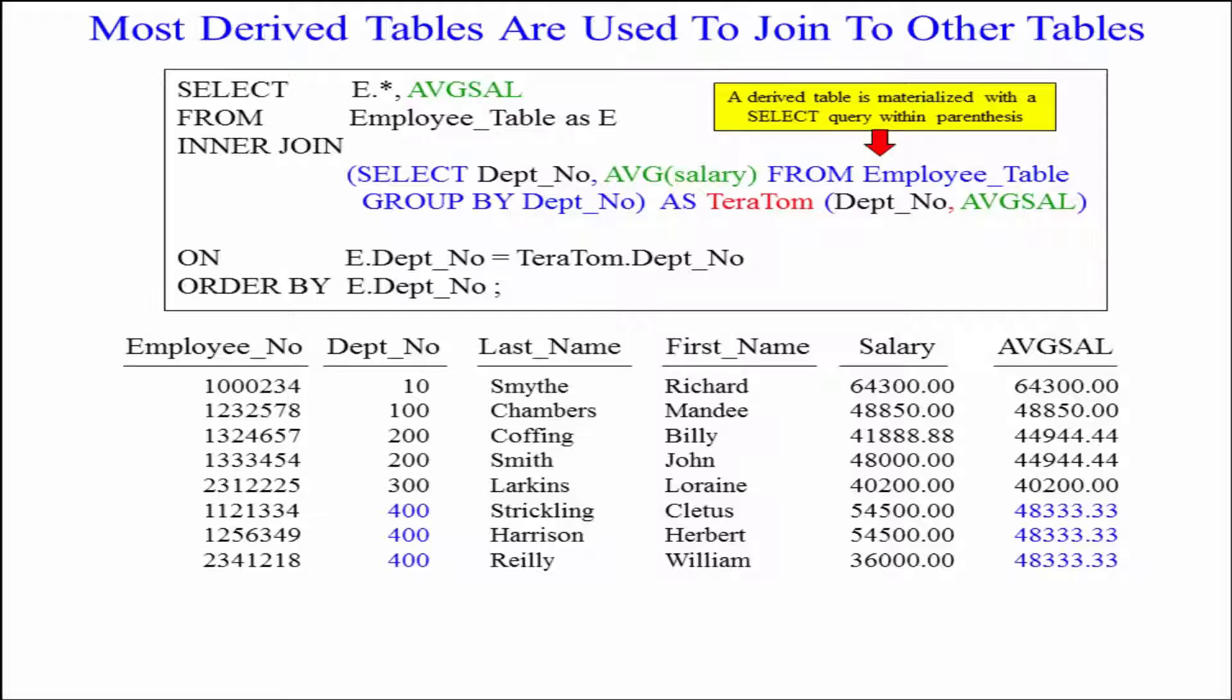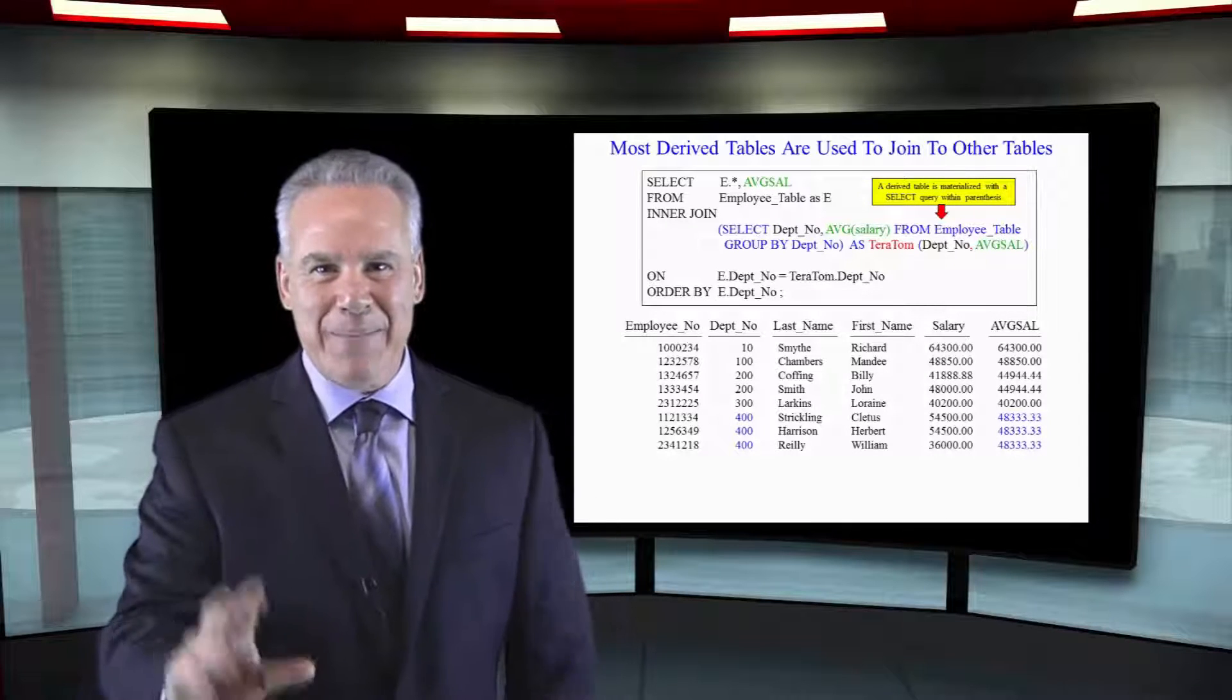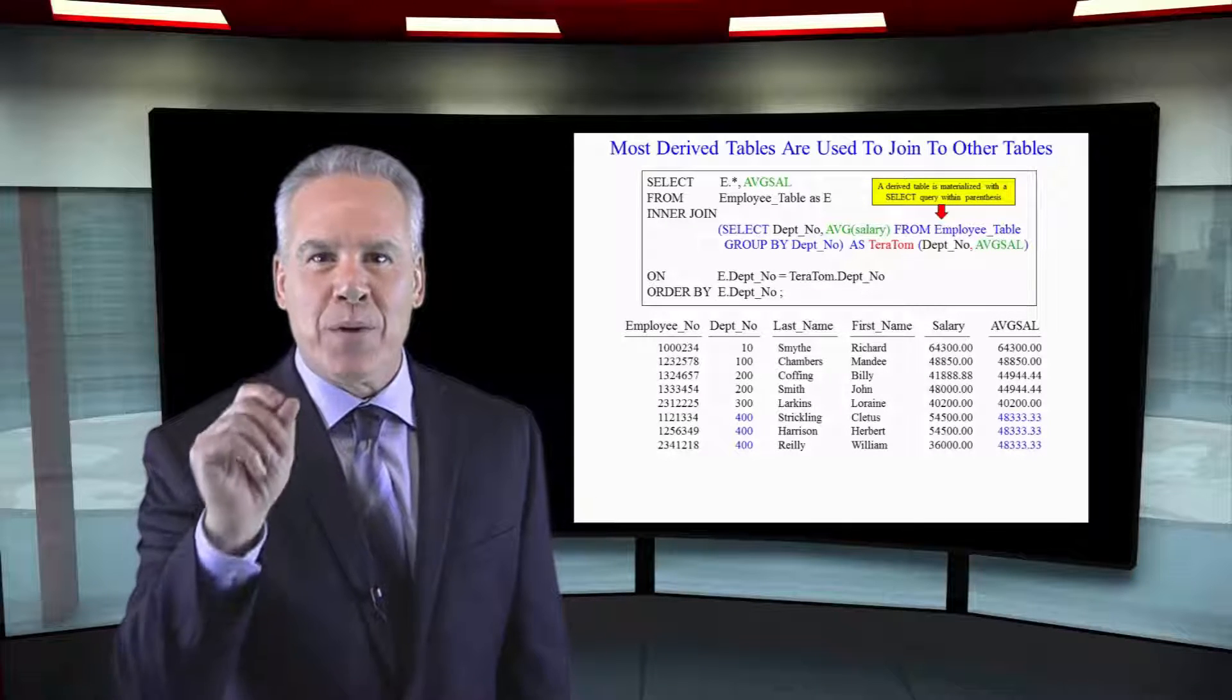We're going to select E dot asterisk, everything from the employee table. AVGSAL, that's going to be our column name in our derived table. From employee table, inner join, timeout. Here's where we run the derived query. We're going to put it in a table we call Teratom, and we list both of the column names. And now we can say time in, and how do we want to join it? On dept no, and dept no, and the report comes out perfect.